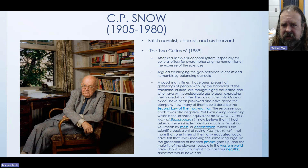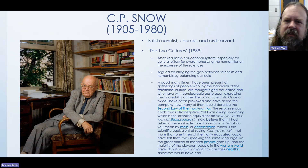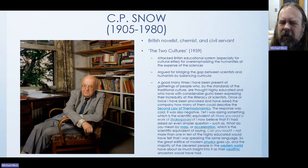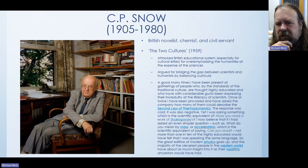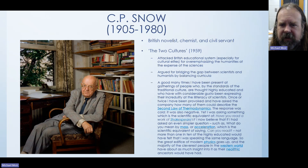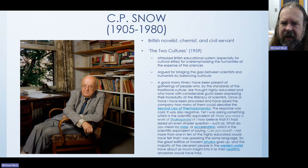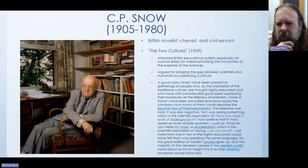The two cultures Snow was talking about included literary critics, authors, historians, linguists, and so on. The thrust of Snow's lecture was really to go after the British educational system — especially the educational system that most cultural elites went through — for over-emphasizing the humanities at the expense of the sciences. He argued for bridging the gap between scientists and humanists by balancing those curricula.